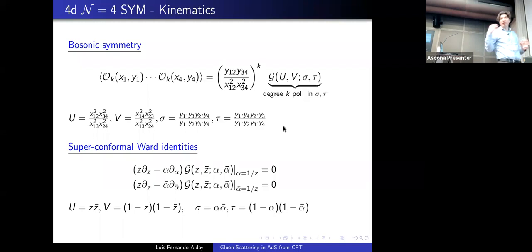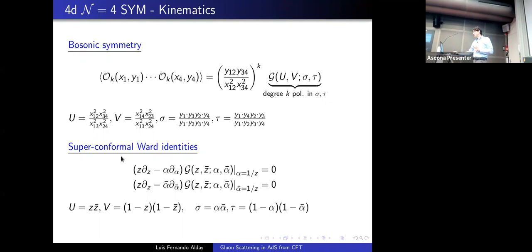We also have the fermionic part of the supergroup, which implies superconformal Ward identities computed by Dolan and Osborn. These imply a very nice set of linear constraints on the correlators, where it is convenient to introduce cross ratios z, z̄ in spacetime and α, ᾱ in R-symmetry space.